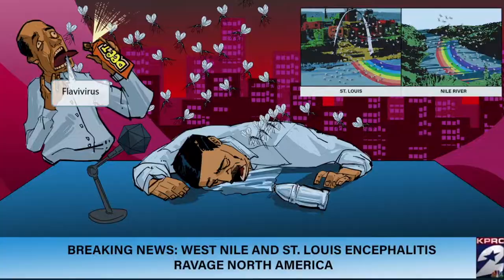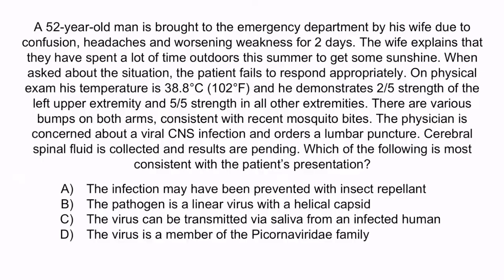A 52-year-old man is brought to the emergency department by his wife due to confusion, headaches, and worsening weakness for two days. The wife explains that they have spent a lot of time outdoors this summer. The patient fails to respond appropriately when questioned. On physical exam, his temperature is 38.8°C (102°F), and he demonstrates 2 out of 5 strength in the left upper extremity and 5 out of 5 strength in all other extremities. There are various bumps on both arms consistent with recent mosquito bites. The physician orders a lumbar puncture and CSF results are pending.